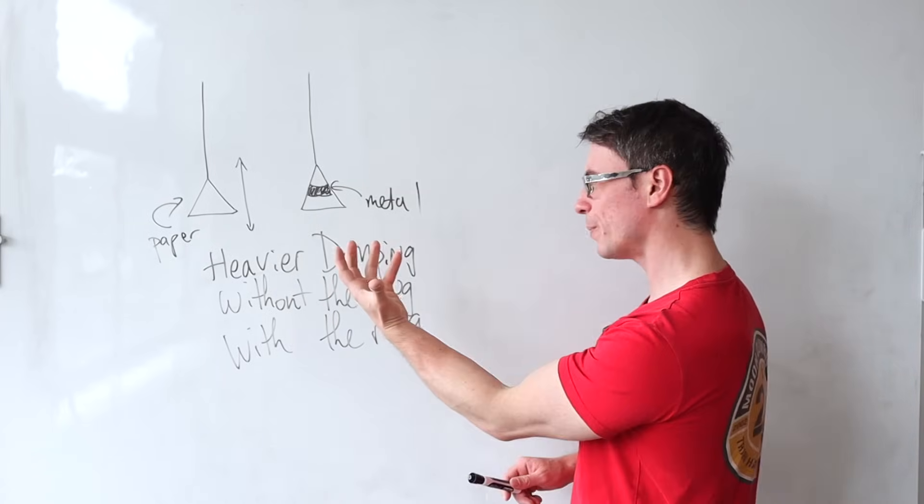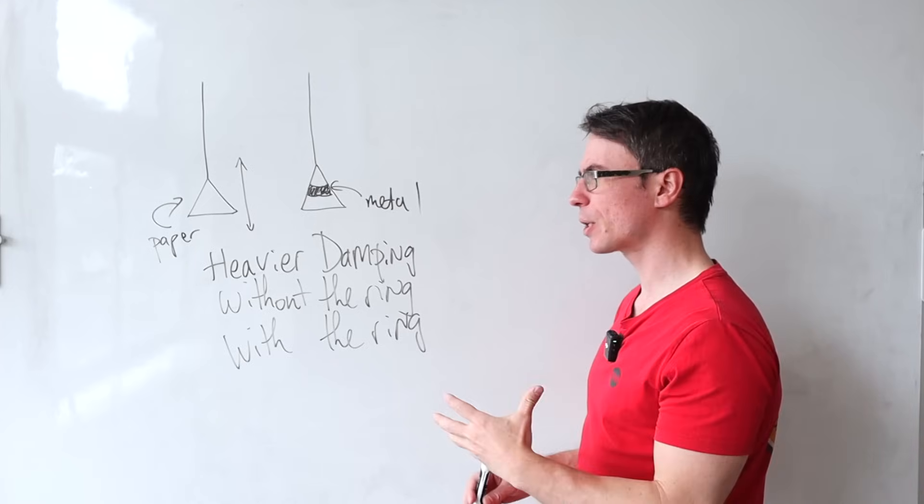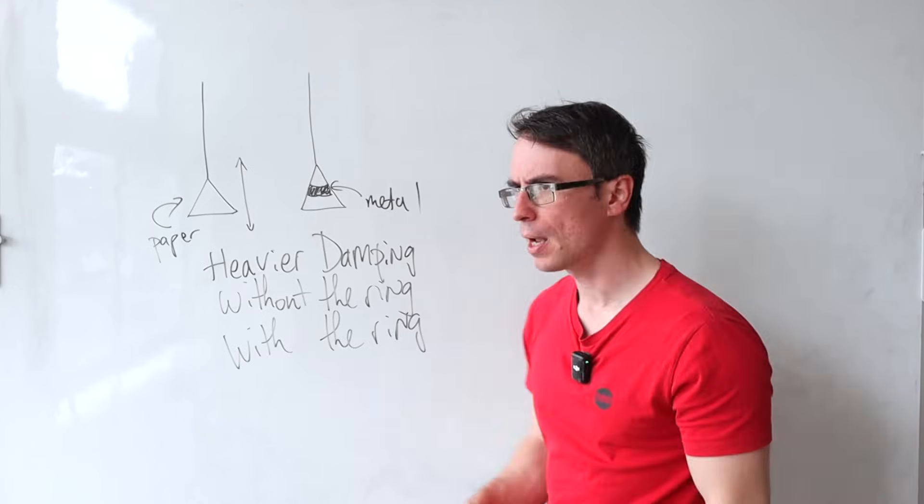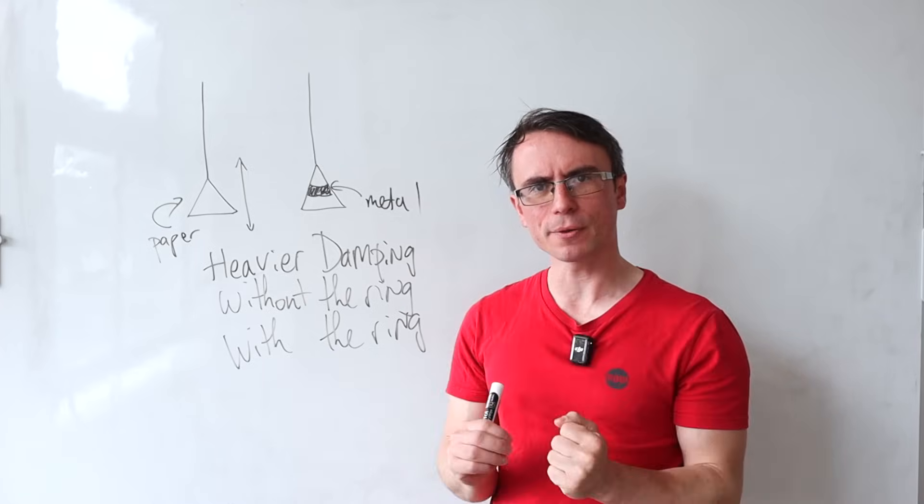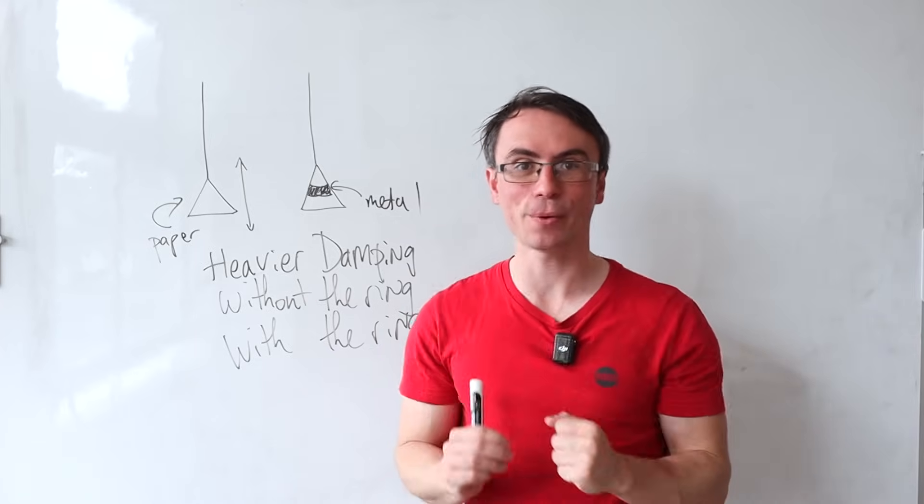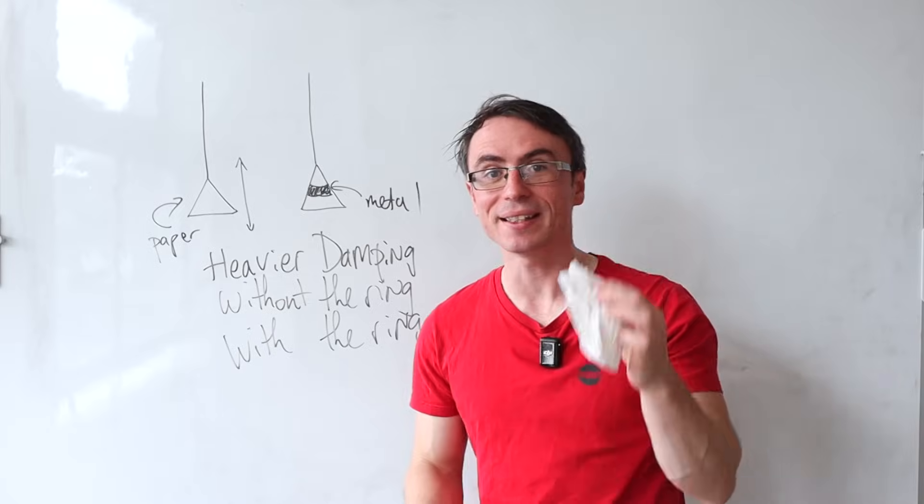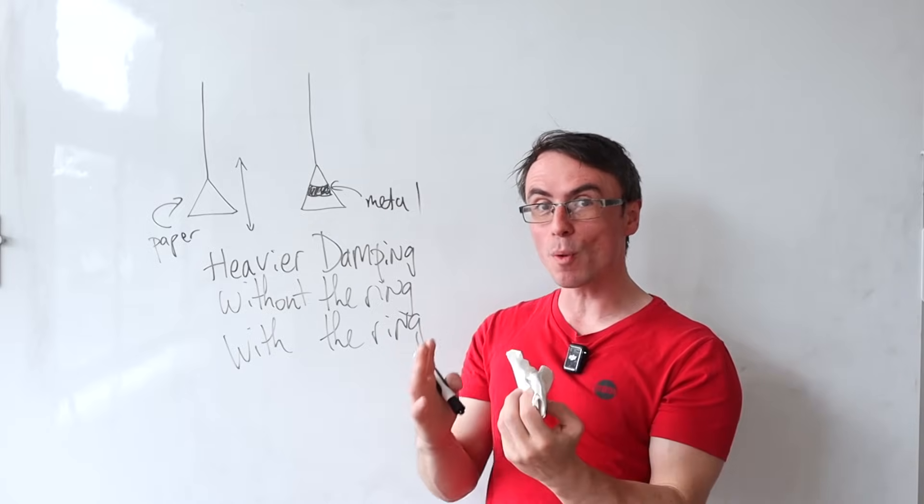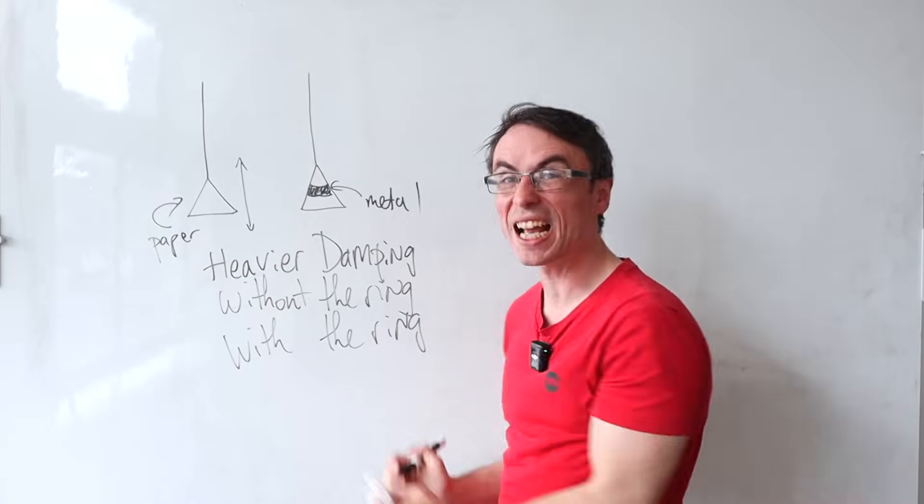So without the ring, what we actually have is just a paper cone. Now, what is causing the damping force? It is air resistance. Air resistance is going to have much more of an effect on lighter objects.